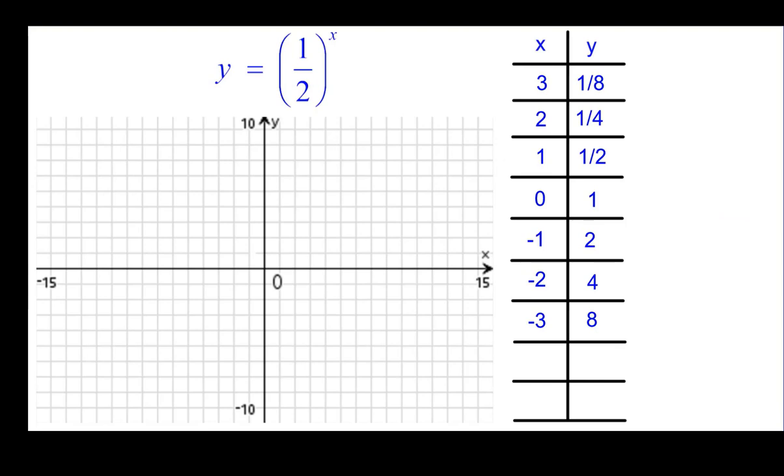These are the values we hope you received here. One half to the third power, one half times one half is one eighth. The negative three, one half to the negative third. The negative would make this reciprocal two and two cubed is eight.